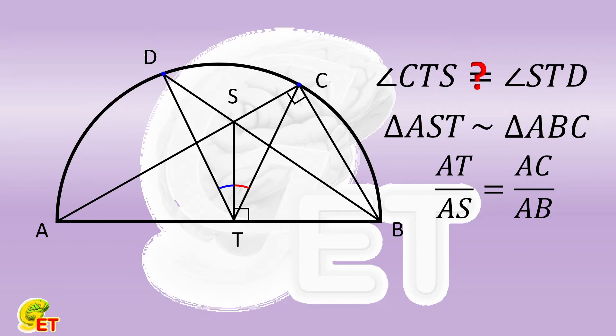These four sides are also the corresponding sides of the triangles ATC and ASB. And the angle contained by these two sets of corresponding sides is also a common one, which is angle BAC. So these two triangles are also similar.